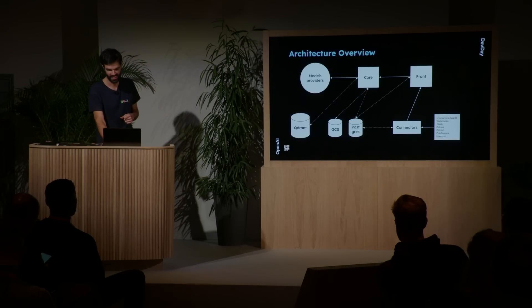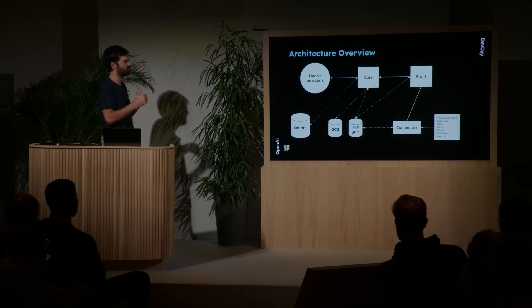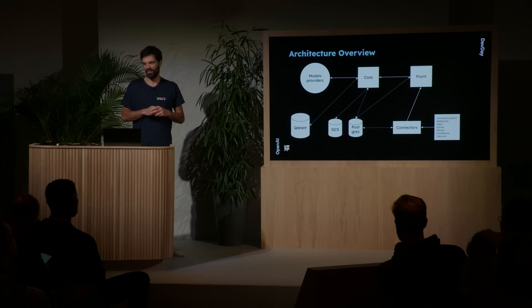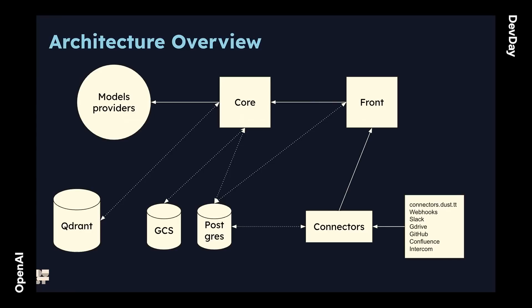So how does this work? To understand, I need to talk a little bit about the Dust architecture. We've got a few components. The first one is called 'front' — this is basically where customers show up: API, web UI, et cetera. That's connected to something called 'connectors.' Whenever someone plugs data to Dust — Google Drive, Notion, Slack, GitHub, etc. — it's synced through a connector. All that is synced to a Postgres database. Then it talks to something called 'core,' which is a Rust application that talks directly to the LLMs and to the Qdrant database, which is a vector search database — that's how we do our RAG.